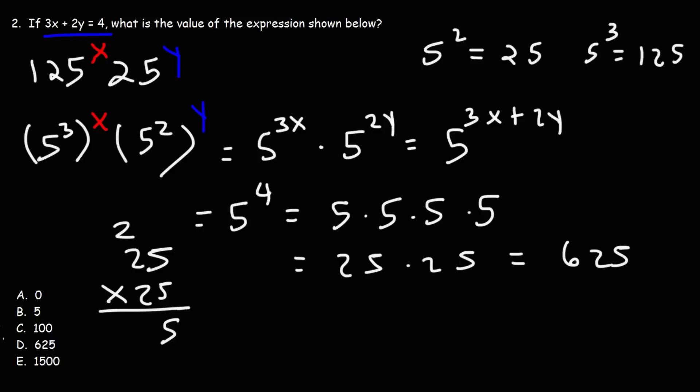2 times 5 is 10. Carry the 1. 2 times 2 is 4. Actually, before we do that, we need to add a 0 first. You can tell I haven't done this in a while. 2 times 5 is 10. Add the 1. 2 times 2 is 4. Plus 1 is 5. And then this gives us 625 when we add it.